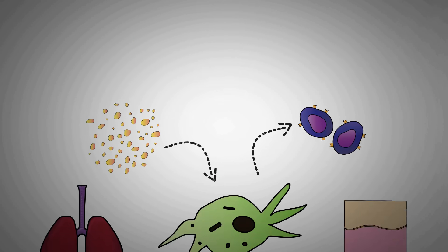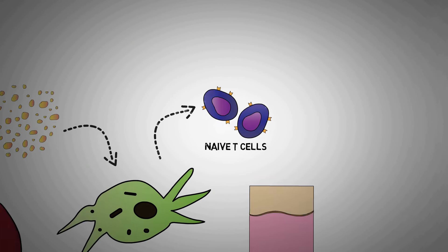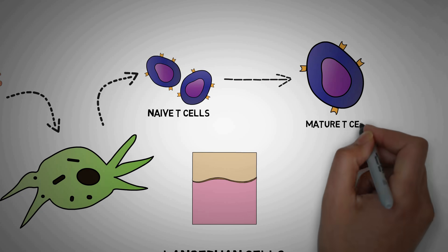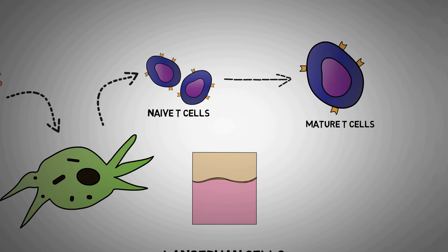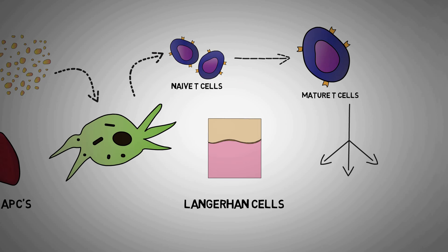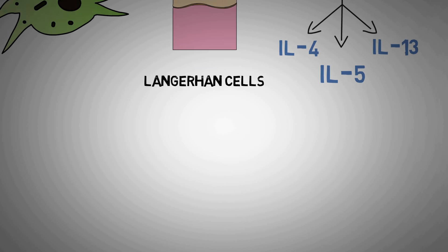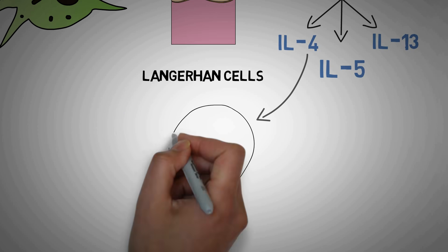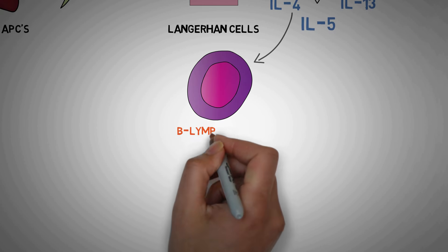To be exact, the naive CD4 T cells. The naive CD4 T cells, when exposed to these antigens, become mature and are now known as mature CD4 T cells. These T cells produce a lot of chemicals like interleukin-4, interleukin-5, interleukin-13 and many more. But in the sensitization phase, the most important cytokine is interleukin-4, which acts on B lymphocytes.